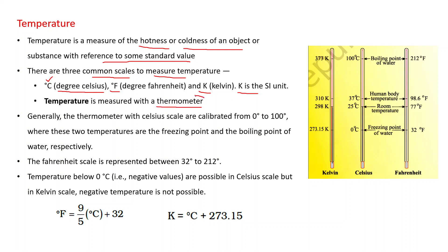Generally, the thermometer with Celsius scale are calibrated from 0 degree Celsius to 100 degree, where these two temperatures are the freezing point and boiling point of water respectively. It means freezing point of water in Celsius scale is 0 degree Celsius and boiling point of water is 100 degree Celsius. The Fahrenheit scale is represented between 32 degree to 212 degree. That is 32 degree Fahrenheit, this is freezing point of water, and 212 degree Fahrenheit, this is the boiling point of water.